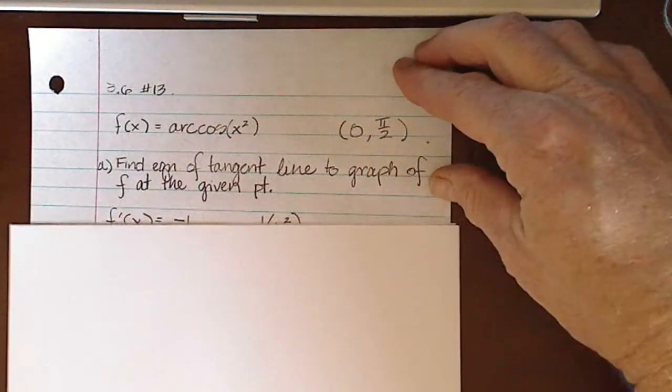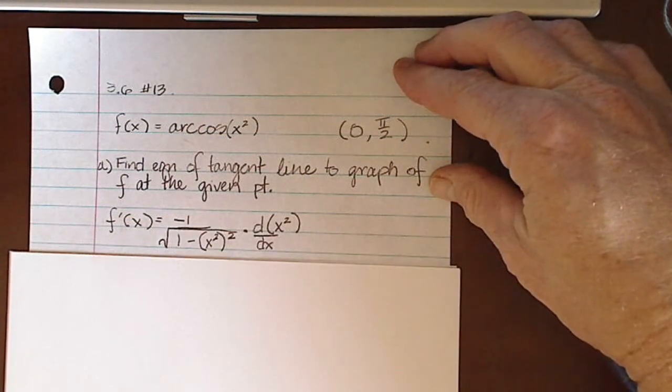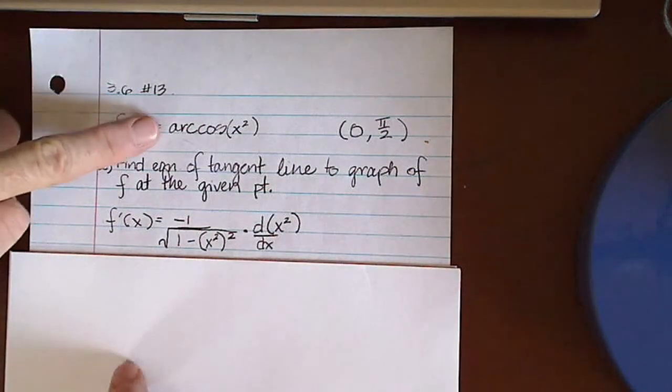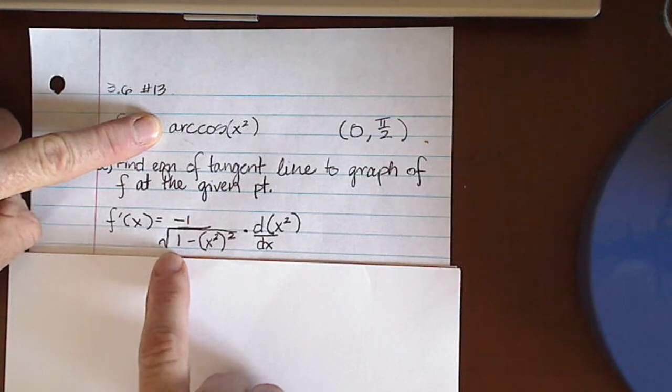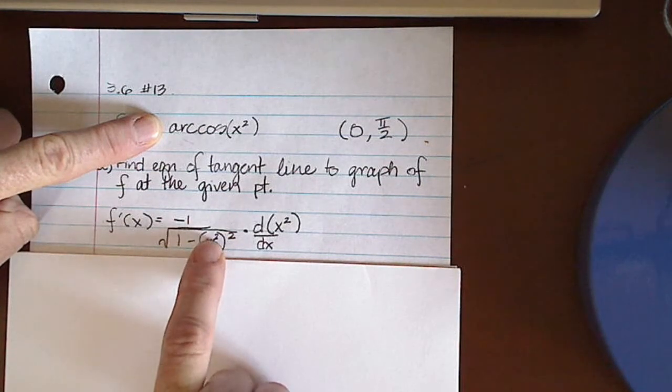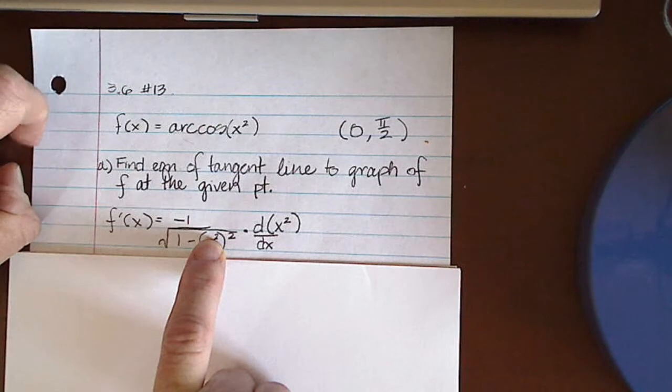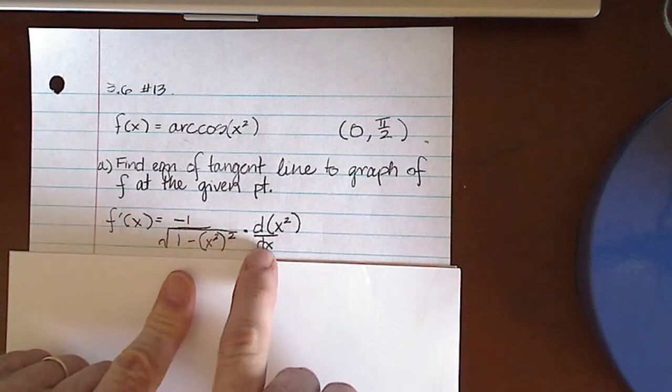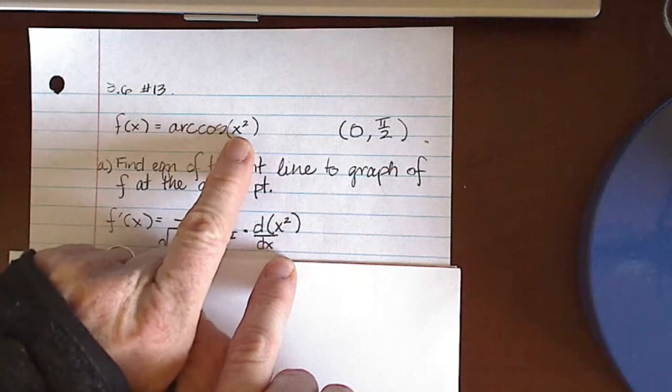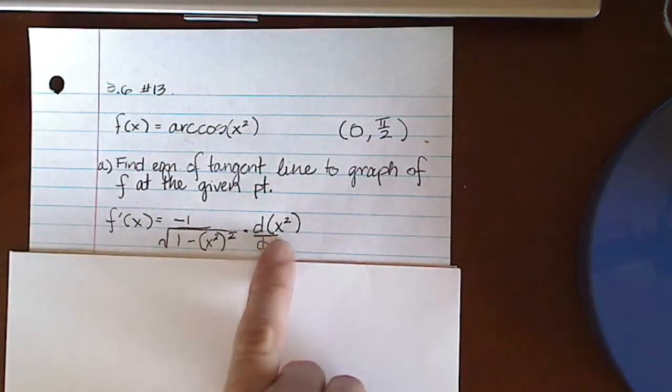So I'm going to use the chain rule to take the derivative, and I know that the derivative of arc cosine is negative 1 over the square root of 1 minus whatever's inside there squared. So I put the x squared inside, and then I have to take the derivative of the x squared function, and multiply by that.